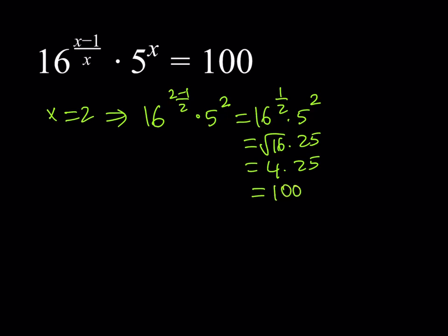This becomes 16 to the power of 1 half multiplied by 5 to the second. And this is square root of 16, multiplied by 25. And that is 4 times 25, and it is equal to 100. Awesome. But we're not trying to guess and check here, obviously. We're going to actually solve this problem algebraically. But we do know that x equals 2 is a solution. So, here's the million dollar question. Are there any other solutions? Or is this the only solution?